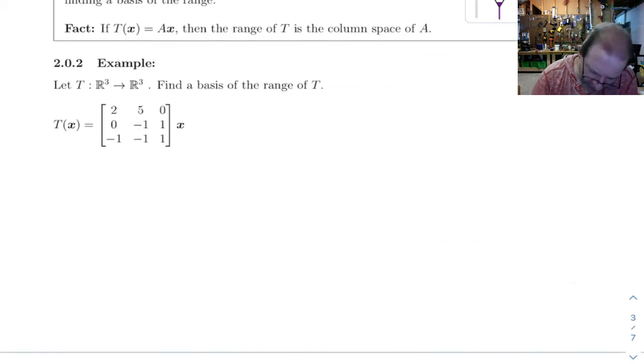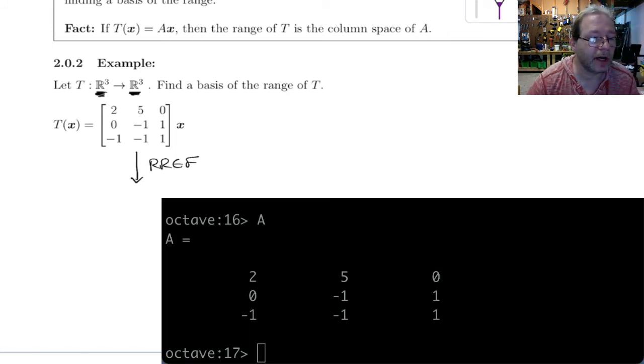Okay, let's go up and do 2.0.2. We're doing really the same thing here. This time we've got T maps R3 to R3. Find a basis of the range of T. Okay, so to find a basis of the range, it's again just a basis of the column space. So we'll row reduce this thing. And I might actually have this one already in here, in Octave.